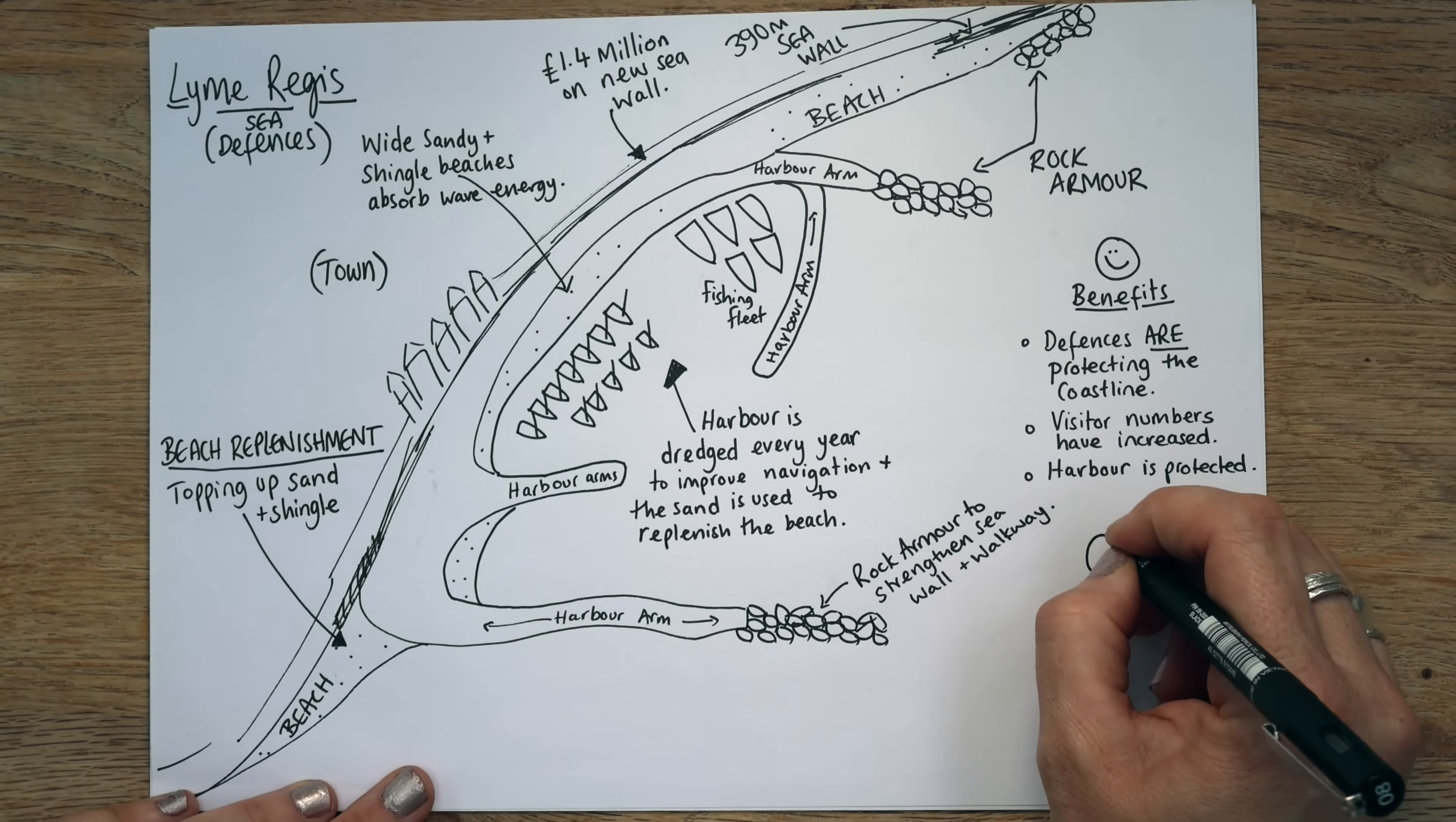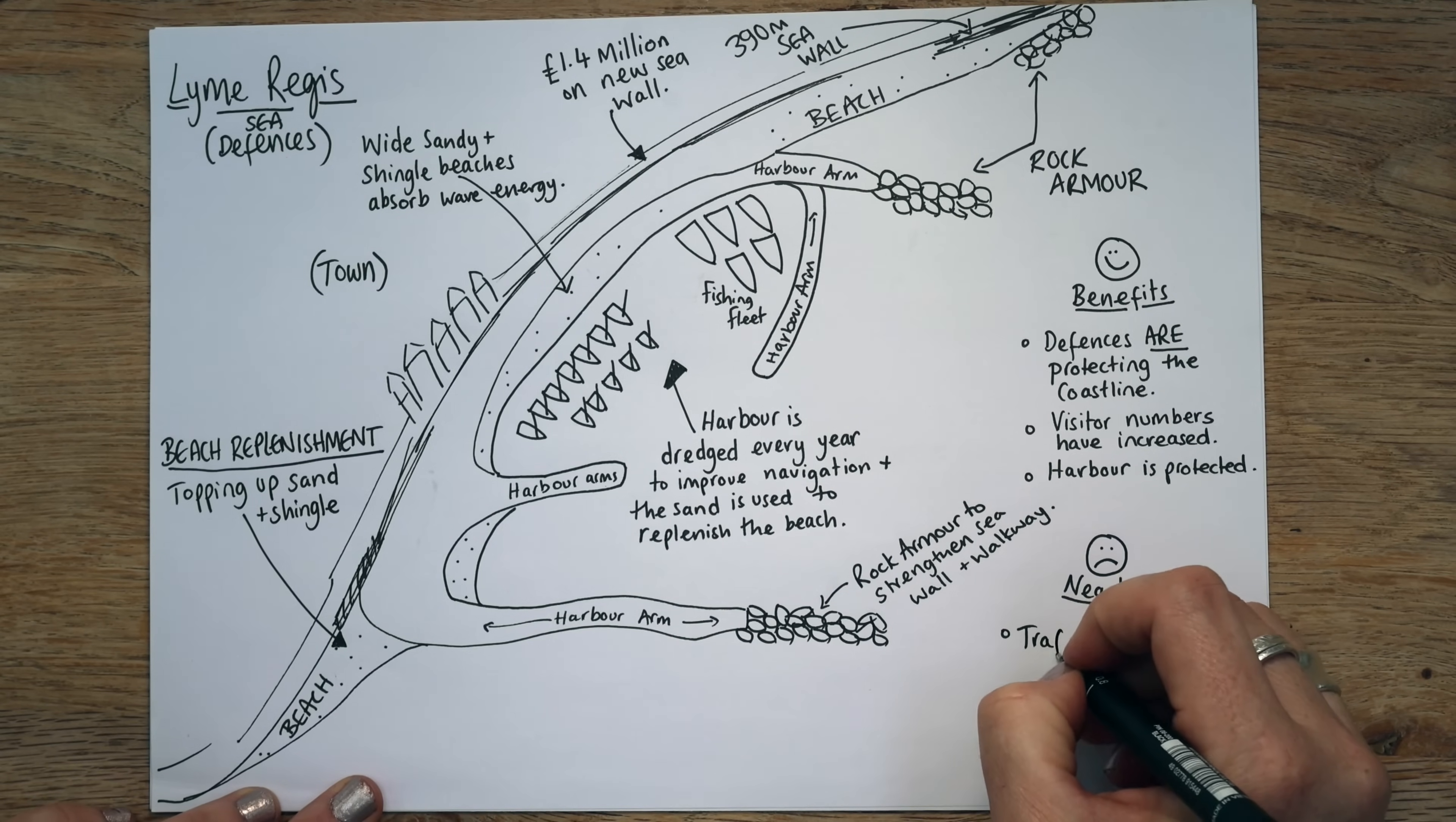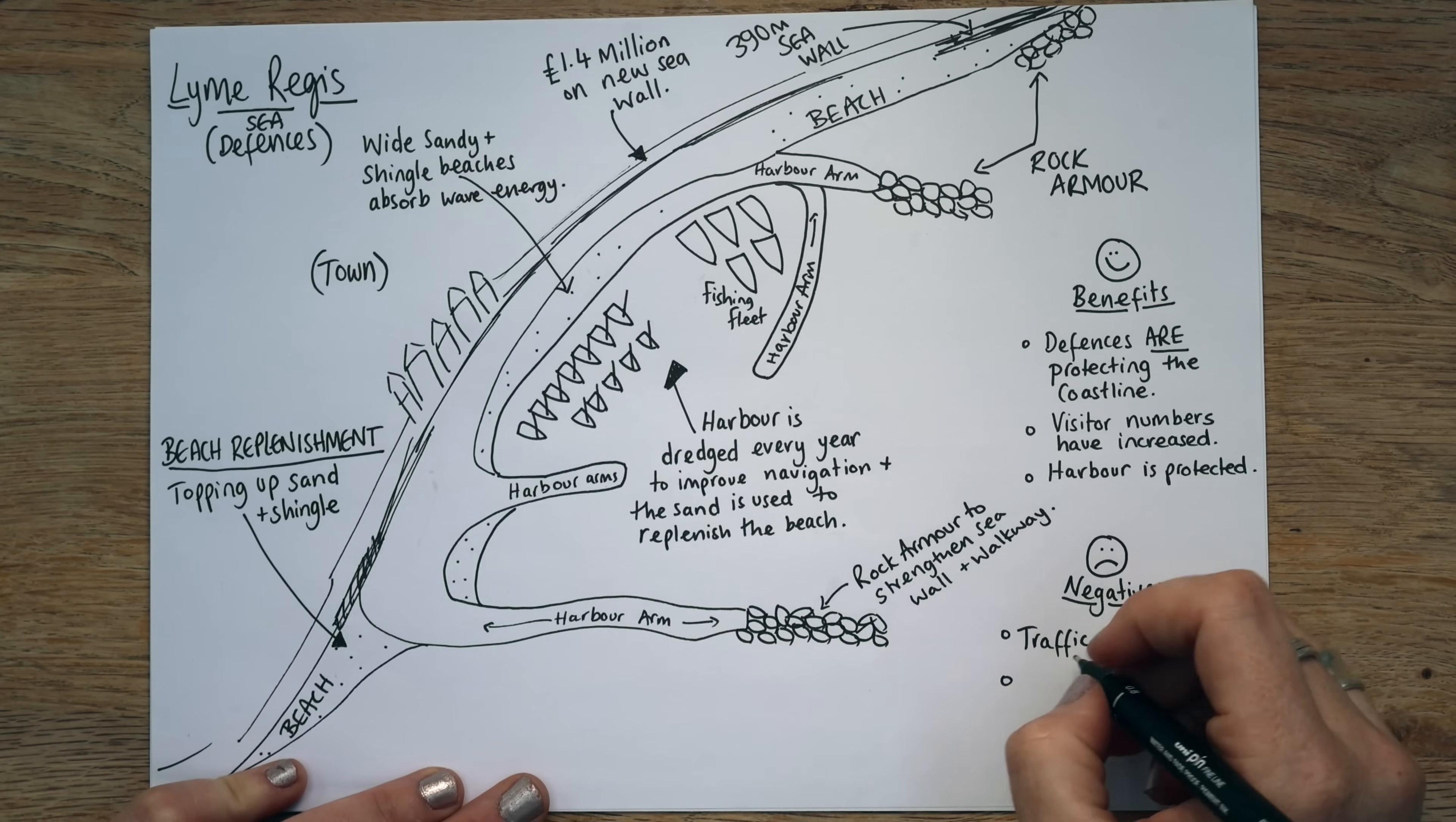There have been some negatives. Not many. But they're worth mentioning, especially if you get a question where you need some negatives. Now, because of all the new visitors, unfortunately, there's been some traffic congestion. Now, Lyme Regis is a beautiful place, but the roads getting to it are not easy. There is one road in, literally one road in, and one road out. And they're kind of one-way systems. And so we've got a lot of traffic congestion down there. It's not easy. I'm not sure how they're going to get around that, because they literally need to build more roads otherwise.